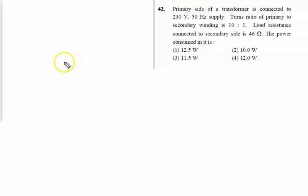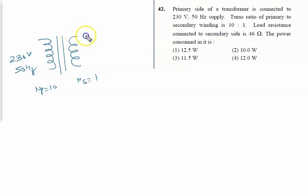The primary side of the transformer is connected to 230 volt, 50 Hertz supply. The turn ratio of primary to secondary is 10 is to 1, where the number of turns in the primary is 10 and the number of turns in the secondary is 1. The load resistance connected to the secondary side is 46 ohm.